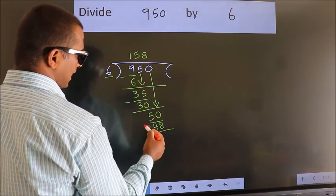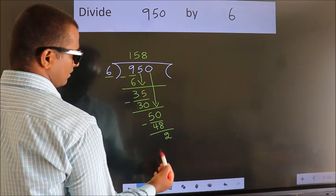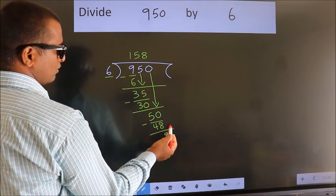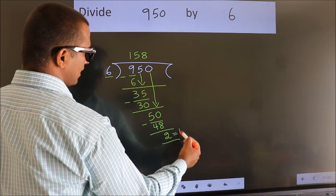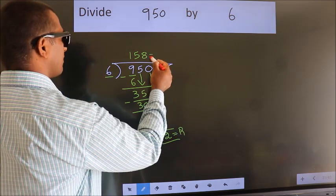Now we subtract. We get 2. No more numbers to bring it down, so we stop here. This is our remainder. This is our quotient.